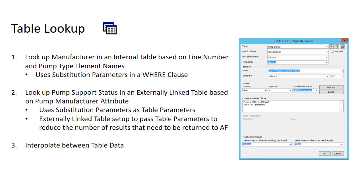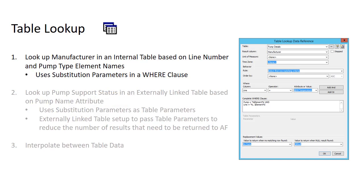In the second example, we're going to look up the status of our pump support contract, which is stored in an externally linked table, and we're going to look this up based on the name of our manufacturer that we found in the first example. We're going to do this using parameterization, meaning the name of the pump manufacturer is actually sent to the external table so it only needs to return the required results. For very large tables, this can reduce the amount of information that needs to be sent from the externally linked table back to AF. And finally, in the third example, we're going to interpolate between table data. Let's go ahead and get started on our first example where we look up the name of the pump manufacturer.